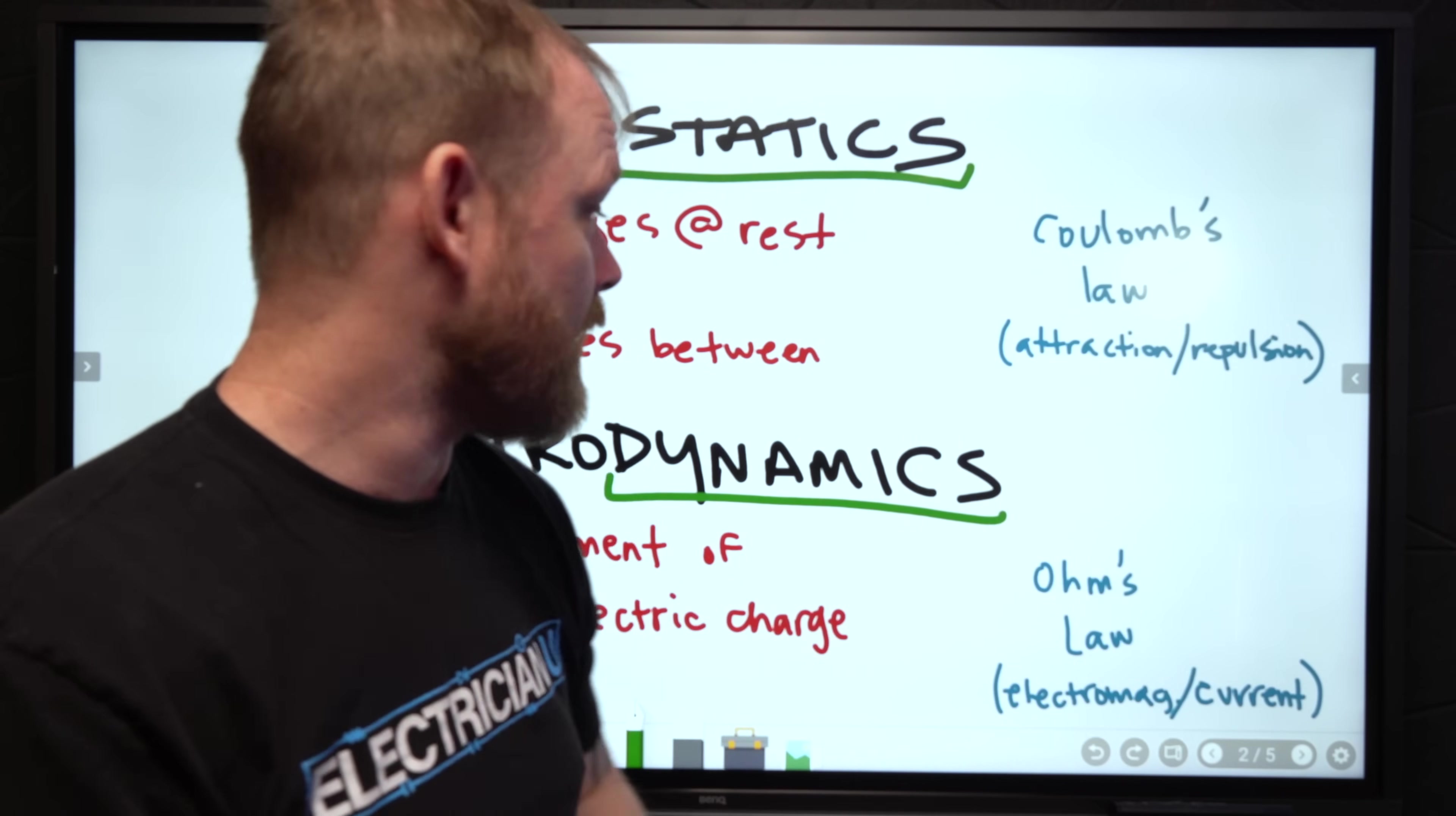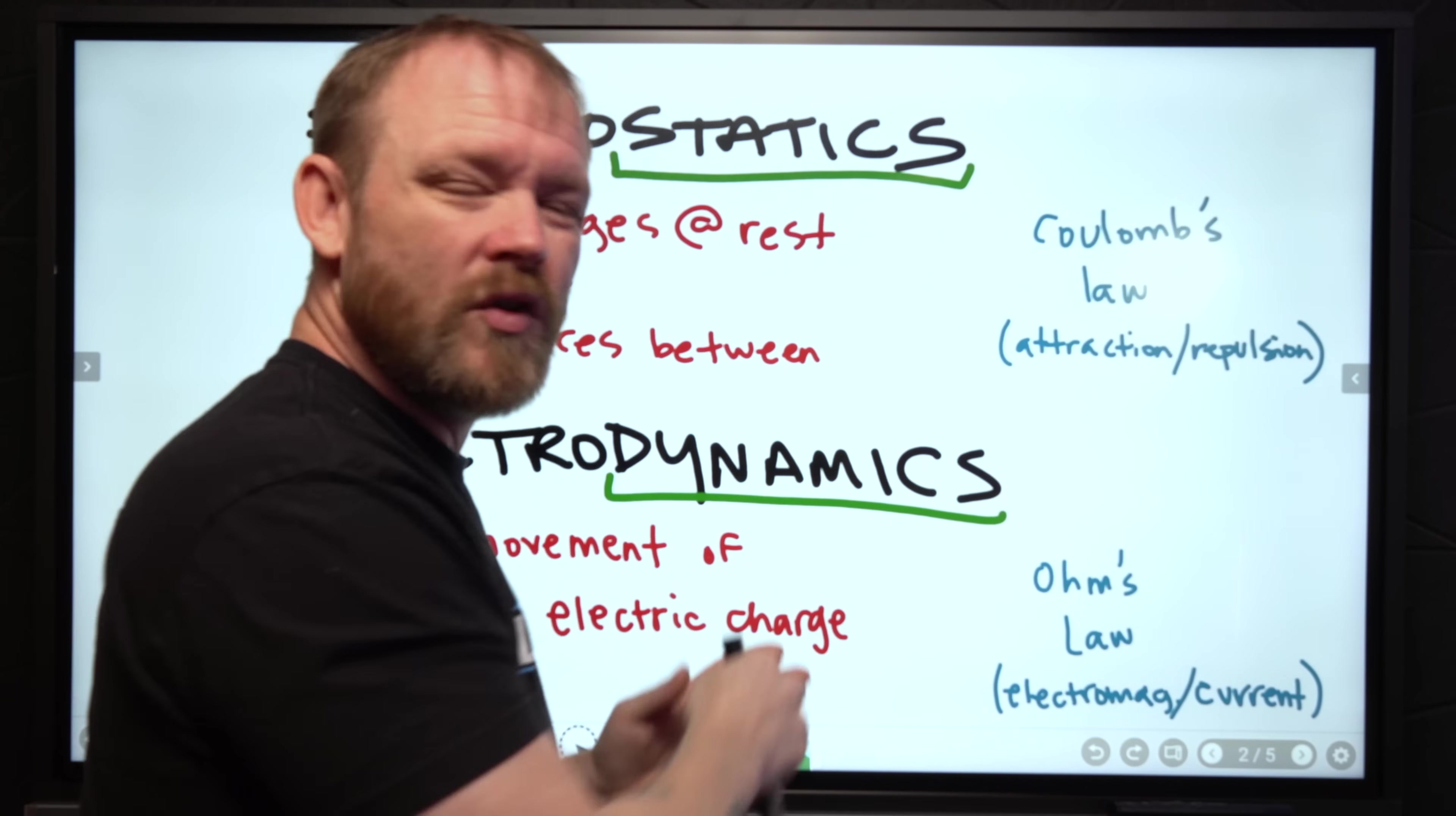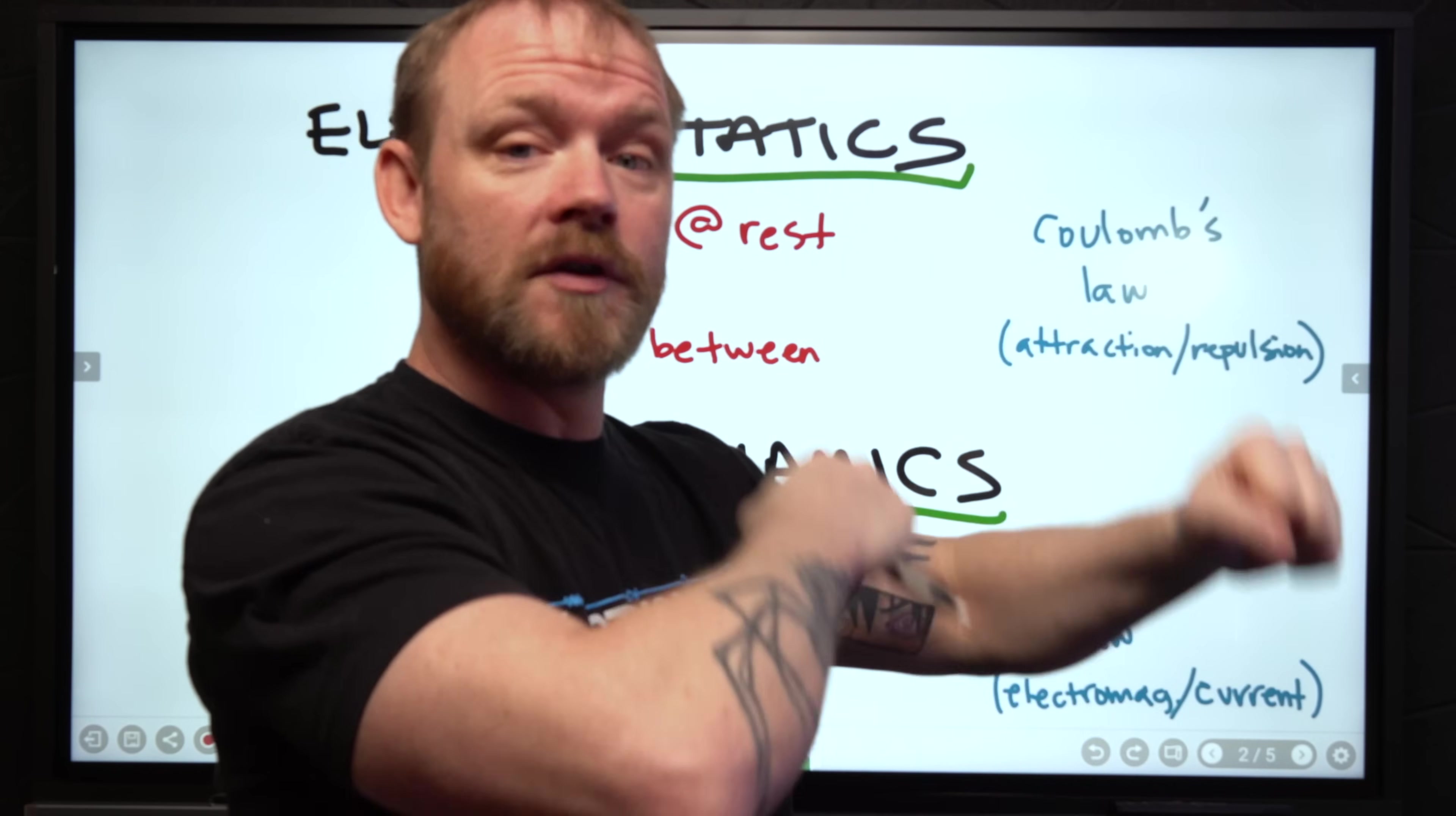Coulomb's law deals with attraction and repulsion of charged particles, as well as fields that exist as a result of that. Whereas electrodynamics talks about the movement of electric charge, and when we talk about movement, largely we're talking about continual movement over time.